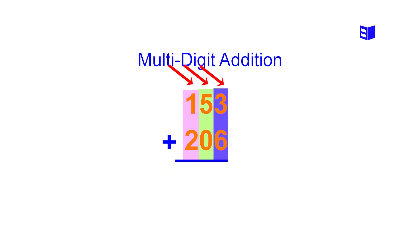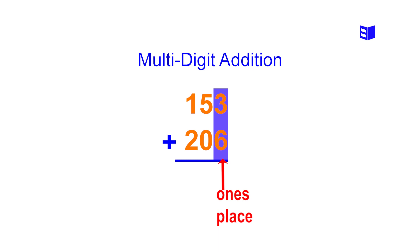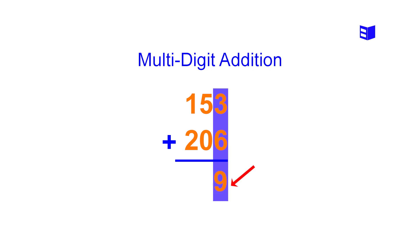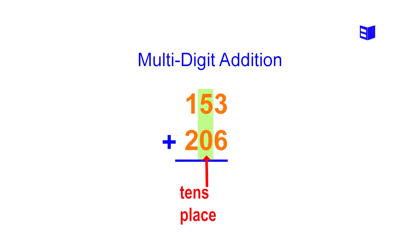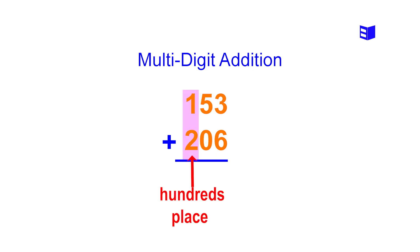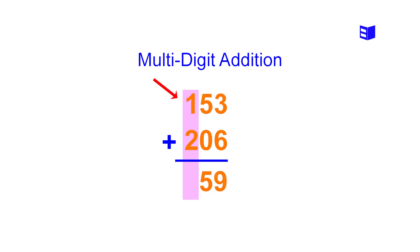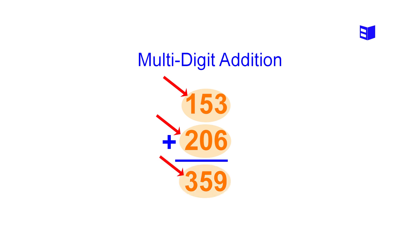Next we perform addition for each column, starting with the ones column. We take 3 plus 6 and the result is 9; we place 9 below the horizontal line. For the tens column, we take 5 plus 0 and get 5; we place 5 below the horizontal line. Finally, for the hundreds column, we take 1 plus 2 and get 3; we place 3 below the horizontal line. We conclude that 153 plus 206 equals 359.